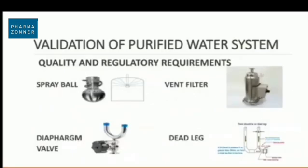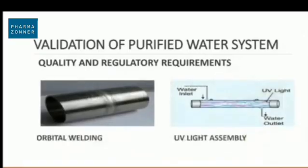Pictures show spray balls, vent filters, and diaphragm valves — diaphragm valves are required as they have zero dead leg. Orbital welding shall be used to connect SS lines; arc welding is not allowed in the water system. UV light assembly is desired after generation of purified water, and most times it is placed in the return loop.